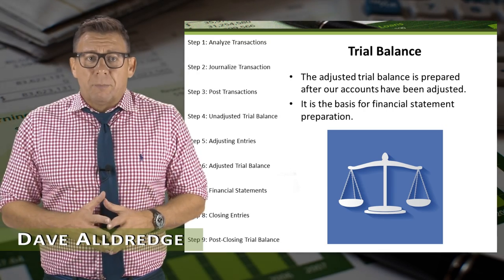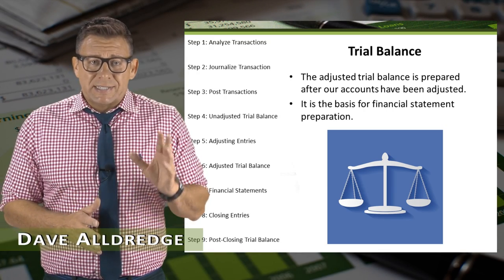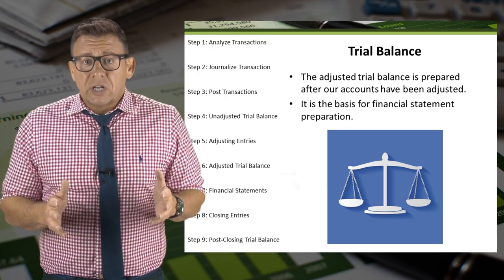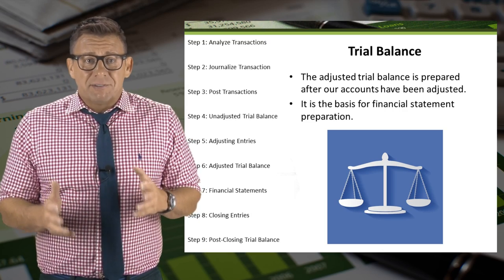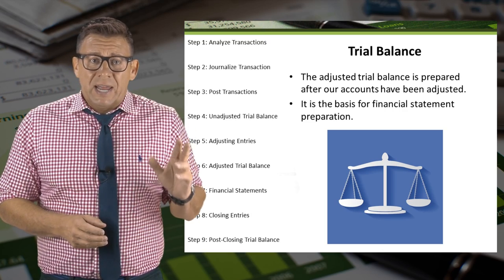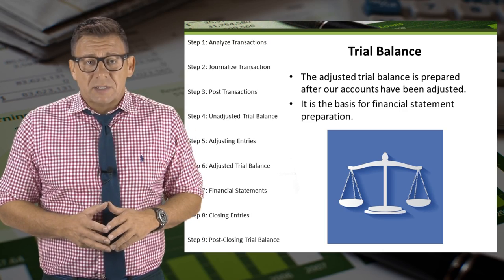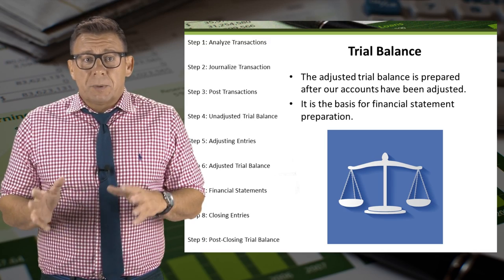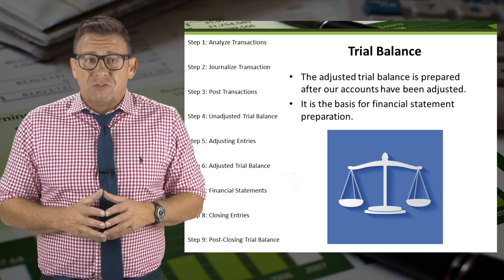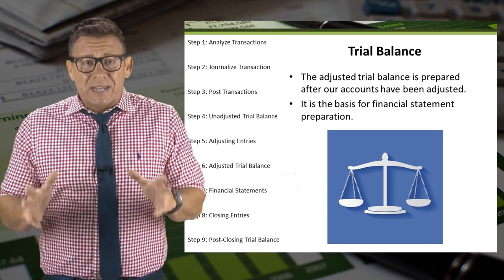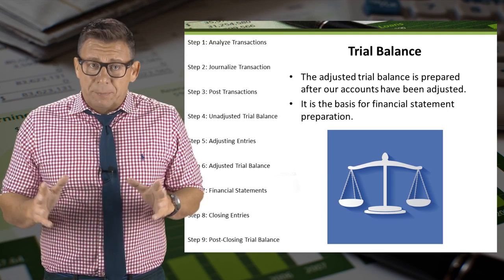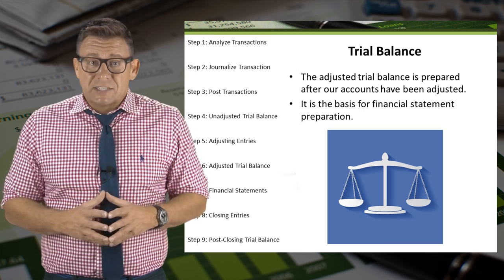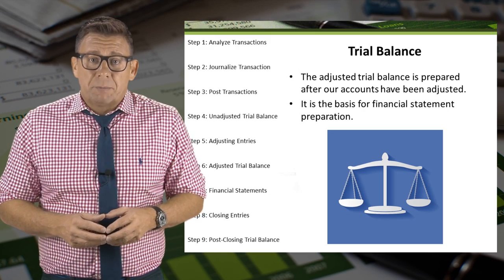Preparing the adjusted trial balance is the sixth step in the accounting cycle. A trial balance is a list of company accounts and their ending ledger balances. The adjusted trial balance is prepared after our accounts have been adjusted. It represents the best information a company has to prepare financial statements — it is the basis for financial statement preparation.